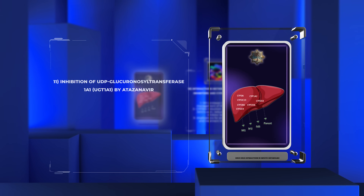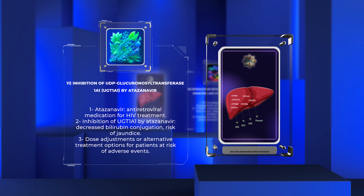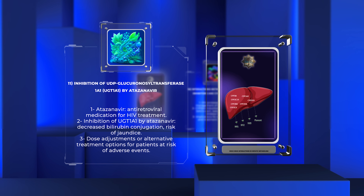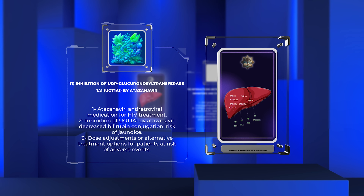Atazanavir, an antiretroviral medication used for the treatment of HIV, is known to inhibit the UGT1A1 enzyme, leading to decreased bilirubin conjugation. This inhibition can result in unconjugated hyperbilirubinemia, causing jaundice in some individuals. Dose adjustments or alternative treatment options may be necessary in patients at risk of adverse events related to UGT1A1 inhibition. Comprehensive understanding of this interaction is crucial for safe and effective use of atazanavir.